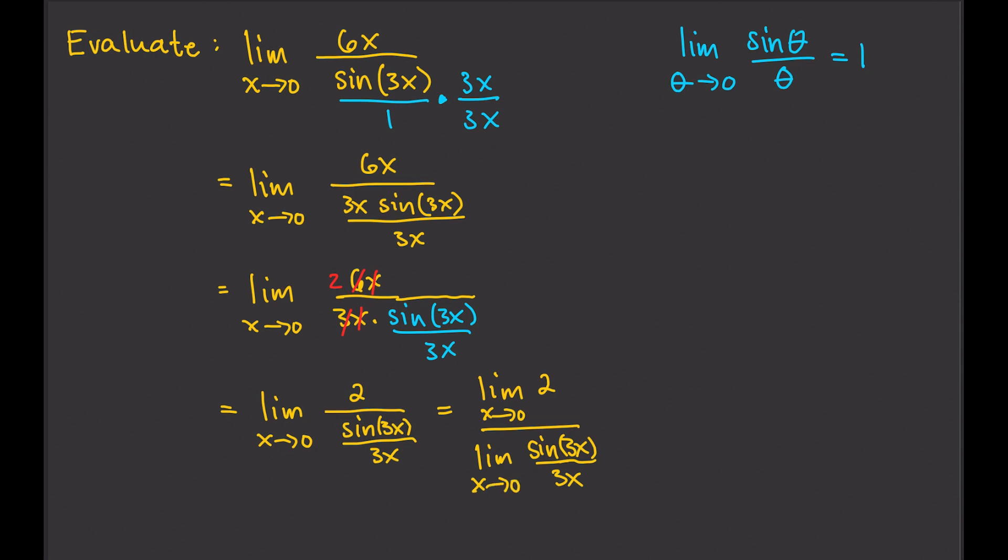Well, we know what the limit of 2 is. 2 is a constant, so that's just 2. The limit of sine 3x over 3x is 1. We know that. So, that's 1 there. And so, finally, what we have is equal to 2.